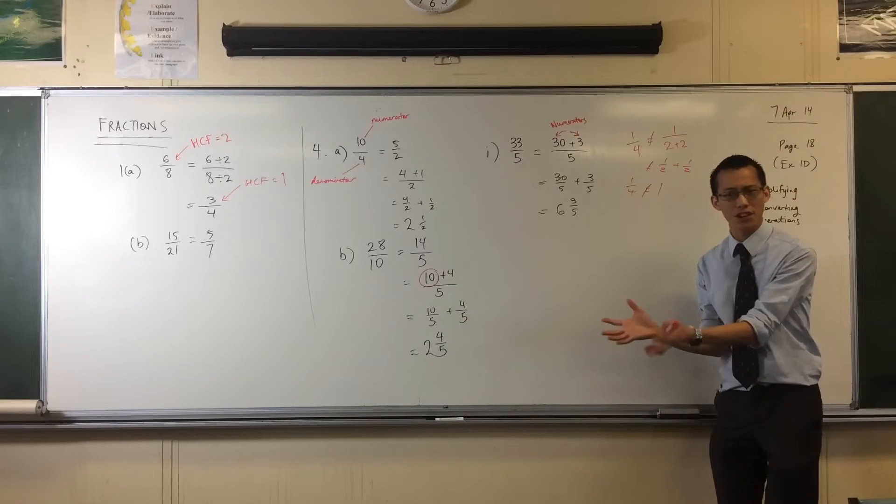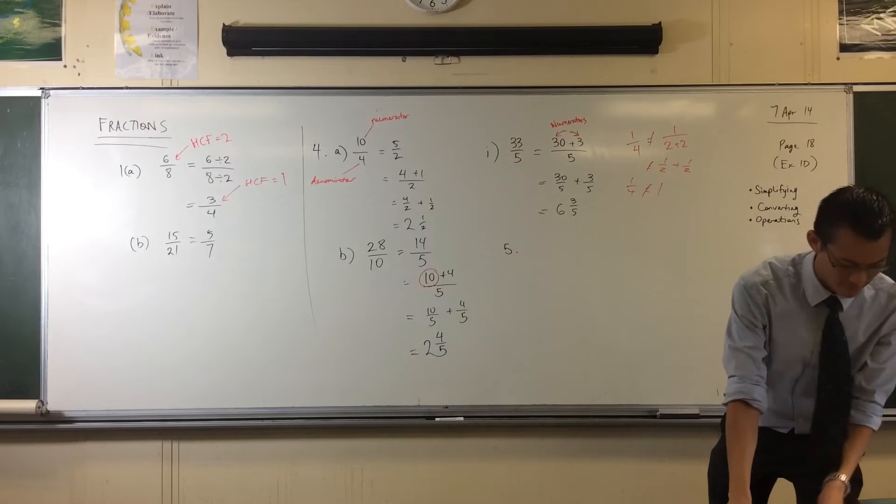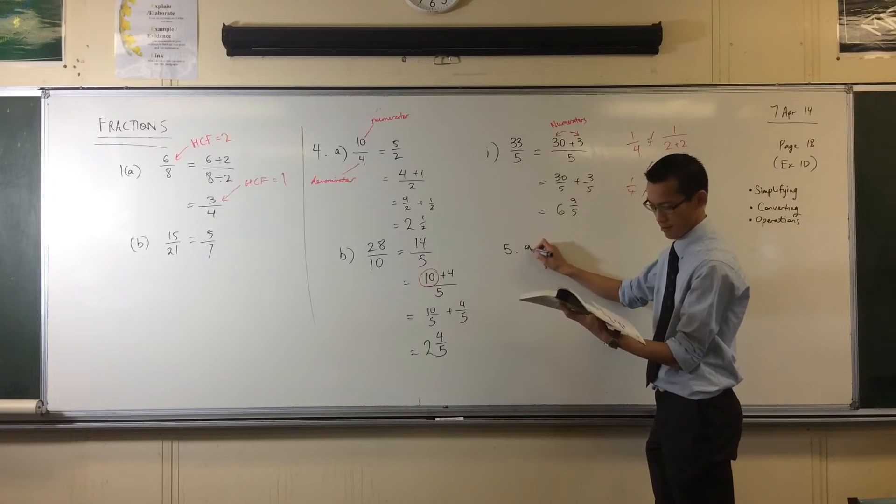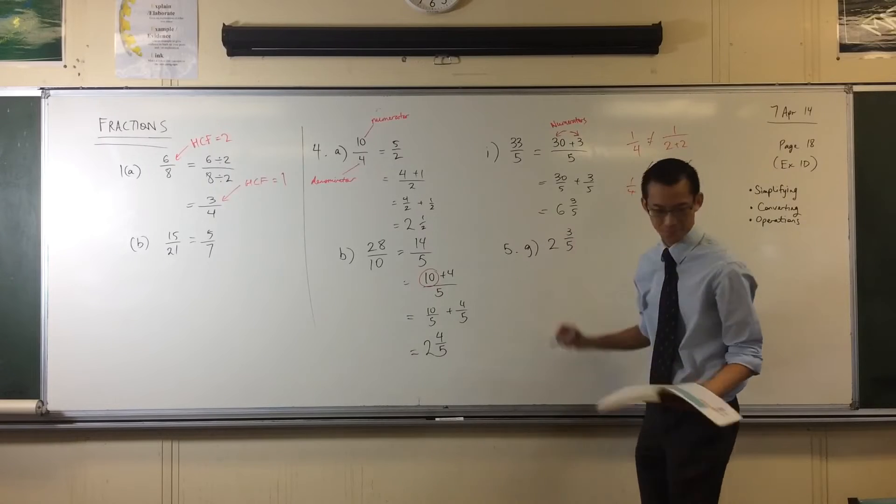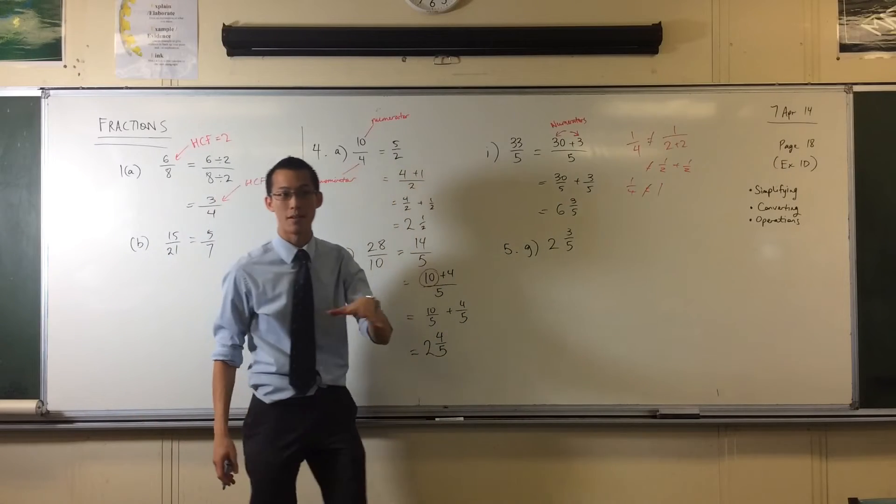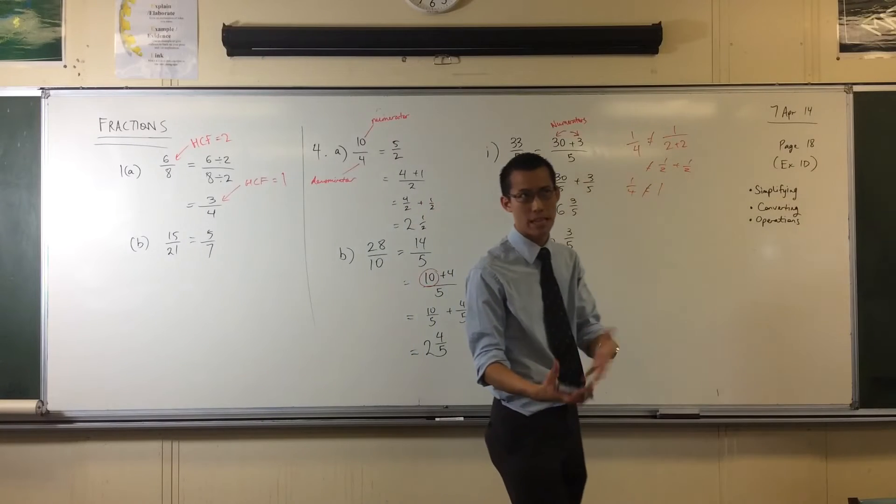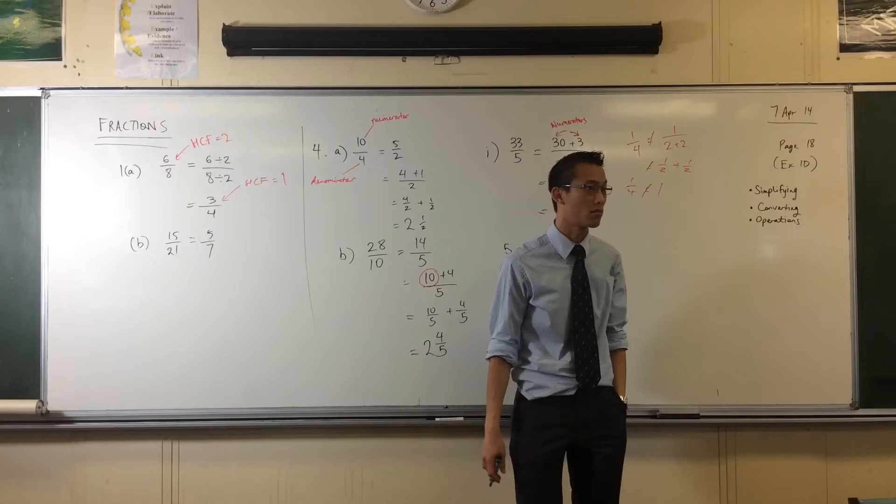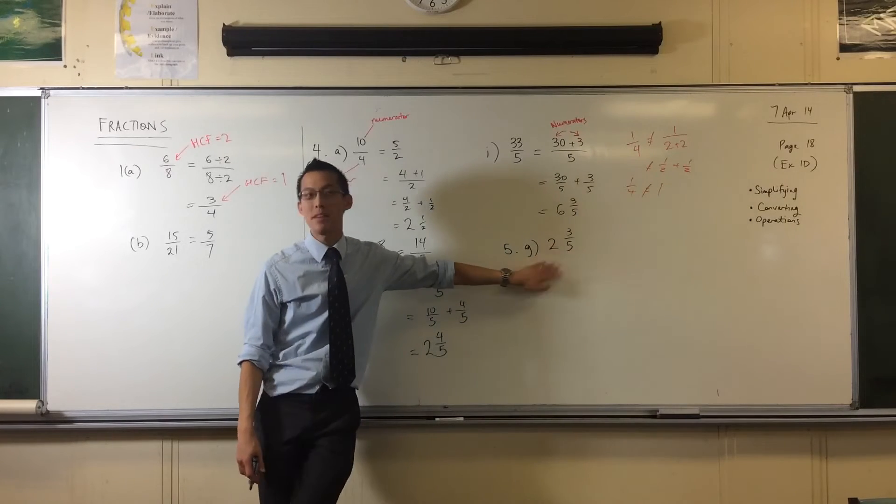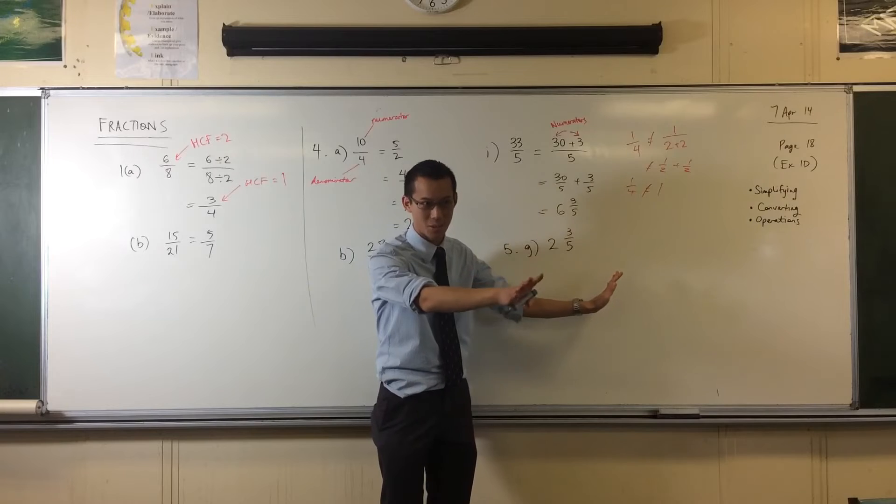Now, do you reckon you could have a go at doing the other way? Let's have a look at question 5. Pick a question. G. G? 5G? That's G. Go straight for the throat. 2 and 3 fifths. So this thing's already a mixed fraction. Do you mean mixed numerals? Yeah, mixed fraction, mixed numeral, same thing, different names. So this thing's a mixed numeral, mixed fraction. So I want to turn it into an improper fraction, but how do I get there? That's the question.